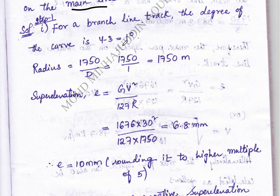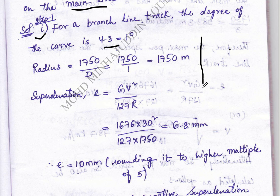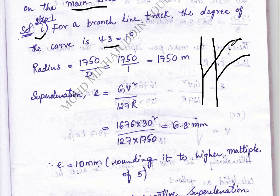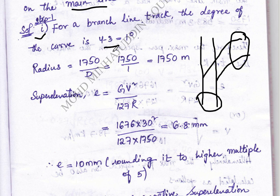For the branch line, the degree of the curve is 4° minus 3° = 1°. To understand this: if this is your main line and a branch line diverges from it, the branch line curve degree = 4° − 3° = 1°. Here 3° is the main line curve given in the problem, so the branch line has 1 degree.